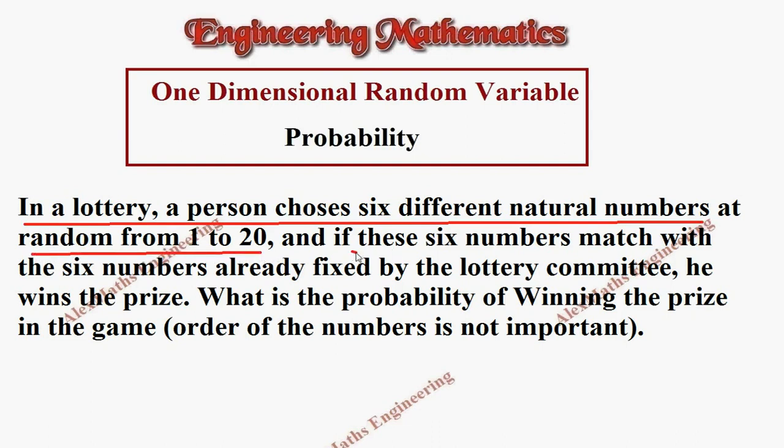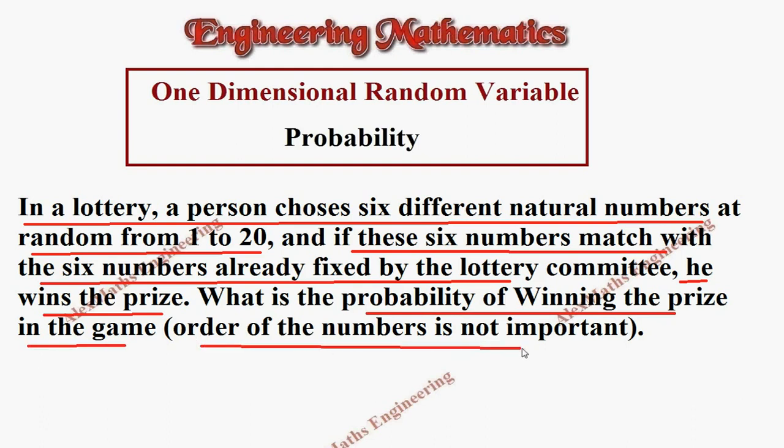If these six numbers match with the six numbers already fixed by the lottery committee, he wins the prize. What is the probability of winning the prize in the game? The order of the numbers is not important, so just six numbers have to match - the selected numbers have to match with the numbers already fixed by the lottery committee.